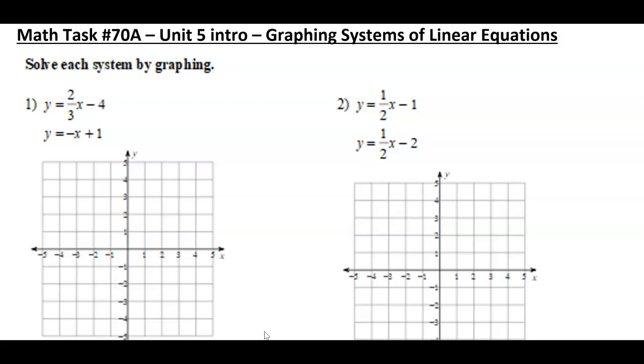So we just start off by graphing. y equals 2/3x minus 4. Start at negative 4, go up 2, 1, 2, and right 3, 1, 2, 3. I can't go up 2, right 3, and I can't go down 2, right 3 either. So there's my line.